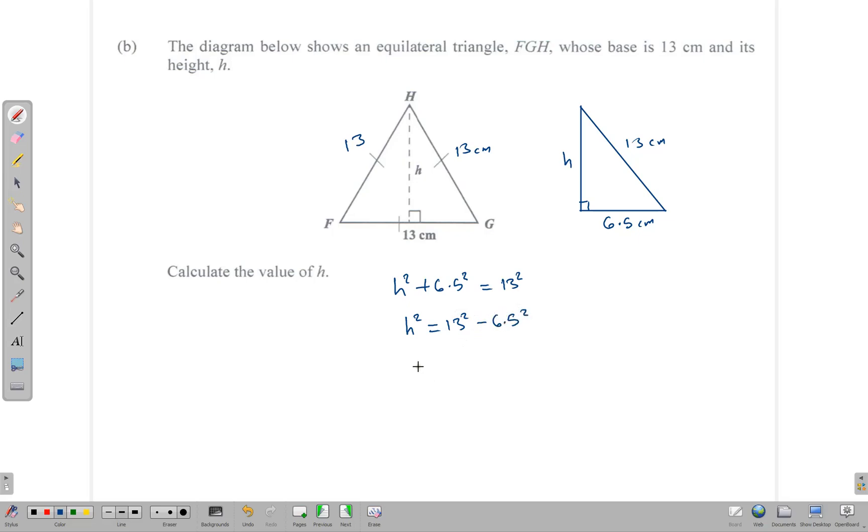Plug that into your calculator. It should tell you that H squared is equal to 126.75, and H is therefore equal to the square root of 126.75. That gives 11.3 when you round it off to one decimal place.